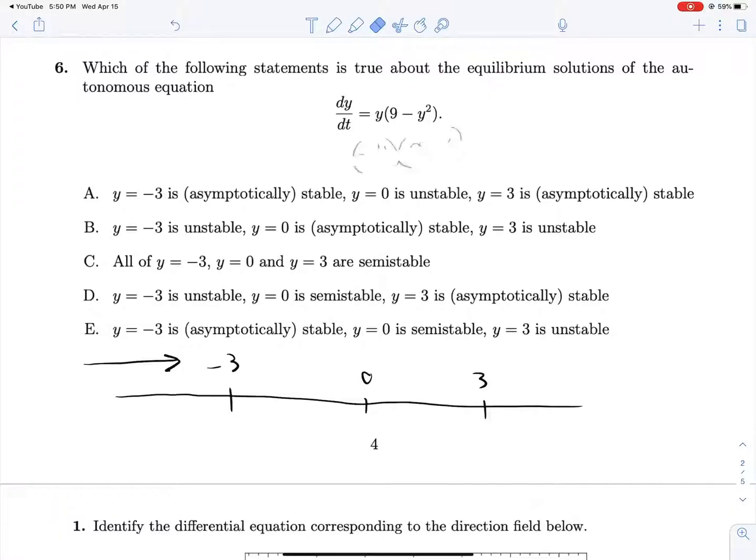So any solution curves that start under a y value of 3 will flow up to 3 and then asymptotically approach it as t approaches infinity. Then what about for y equals negative 1? If we plug negative 1 in, we will get negative 1 times 9 minus negative 1 squared. So that'll be a positive number. We have negative times positive, so we get a negative derivative. And then if we plug 1 in, we will have 1 times 9 minus 1. So that's a positive value, will flow away from 0 up to 3.